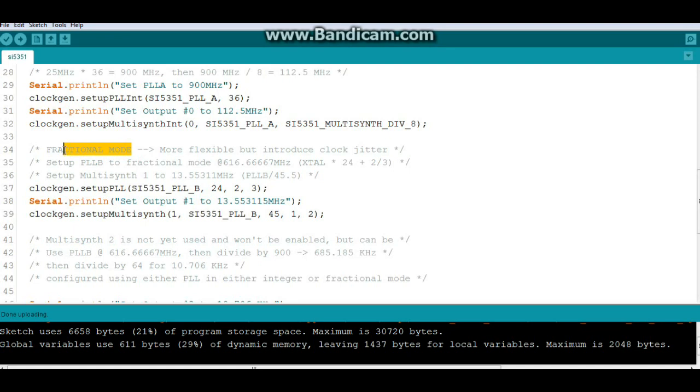Now we also have fractional mode but it does give you a little bit of jitter not much but some. So we're going to set our phase lock loop B to 616.6667 megahertz and we'll set our multi-synth up to 13.5 megahertz.